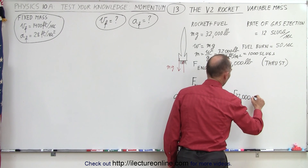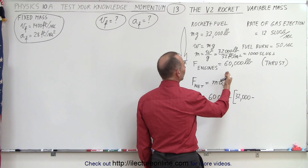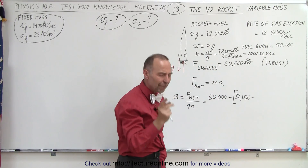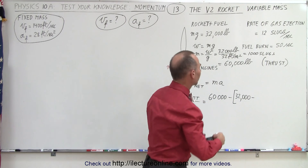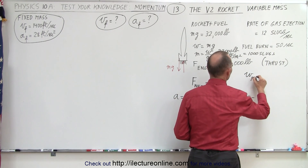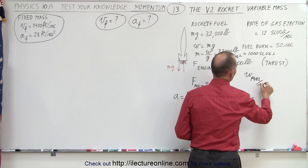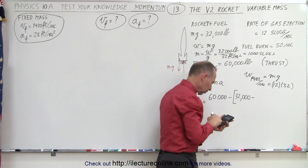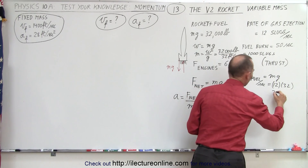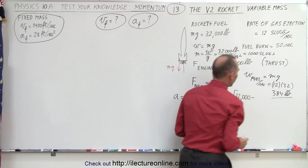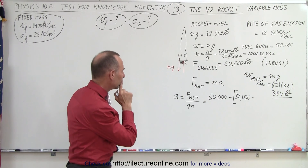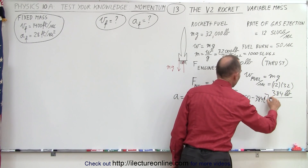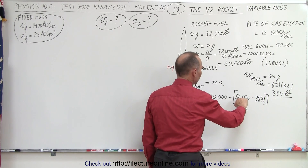The weight is going to be 32,000 pounds minus the weight of fuel burned. We're burning 12 slugs of fuel every single second. To convert to pounds, we multiply mass times G: 12 slugs times 32 equals 384 pounds per second. So we're burning 384 pounds per second, meaning the weight term is minus 384 times T. That's the total force on the rocket.